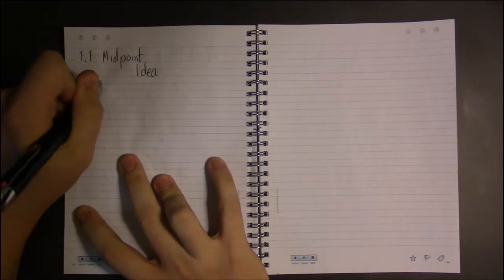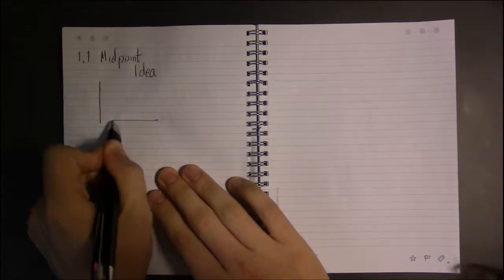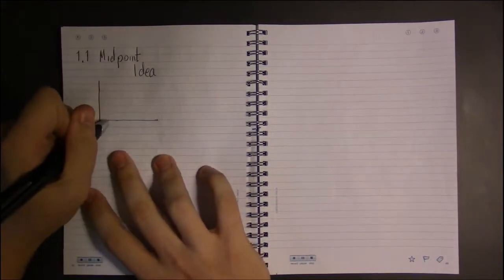The last topic we need before we talk about circles in 1.1 is this idea of a midpoint. A midpoint is simply a point that is exactly halfway between two points. So let's see, last time we had